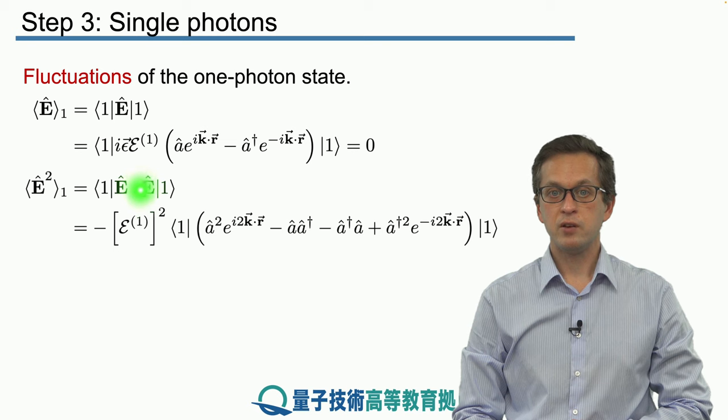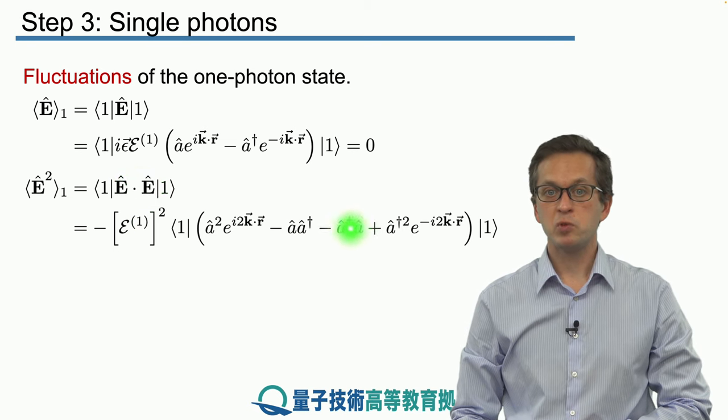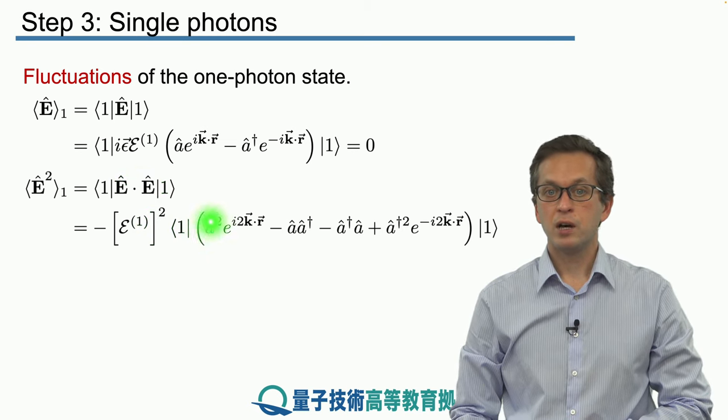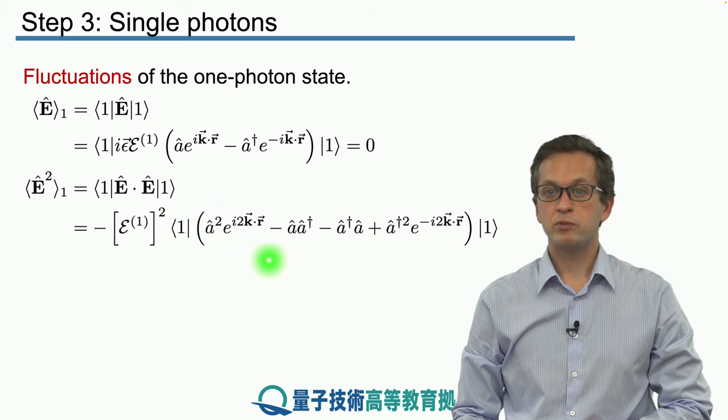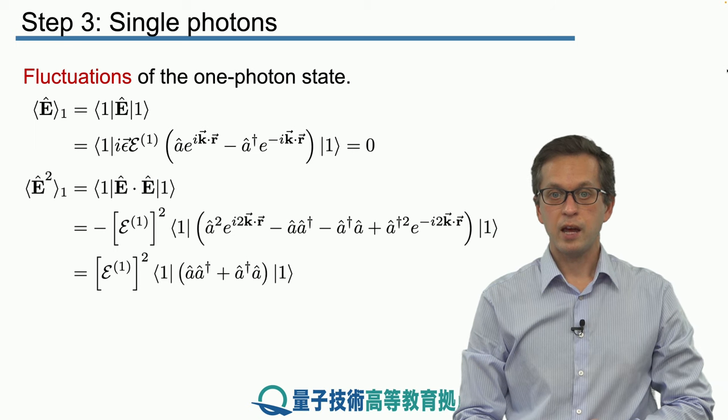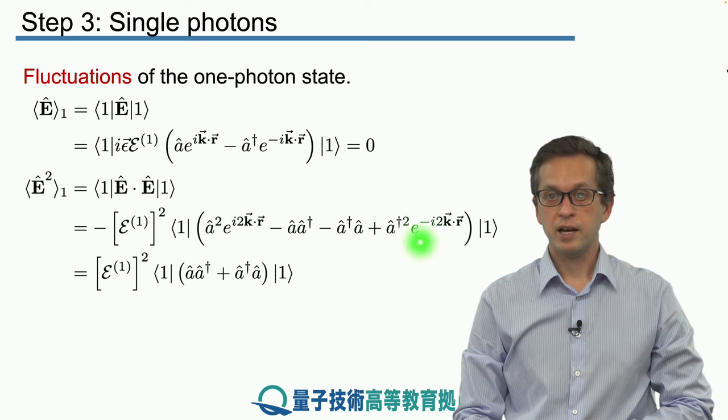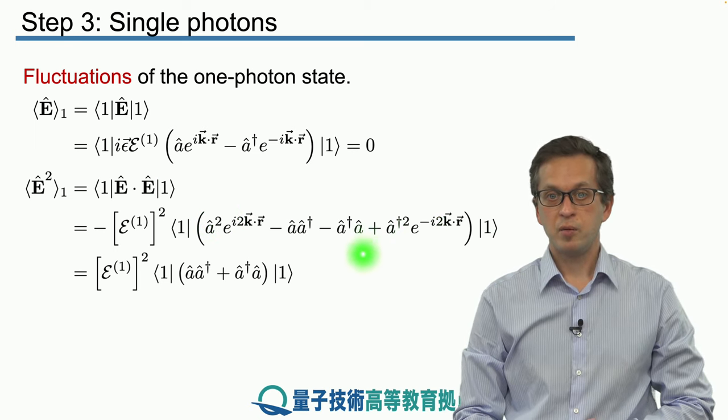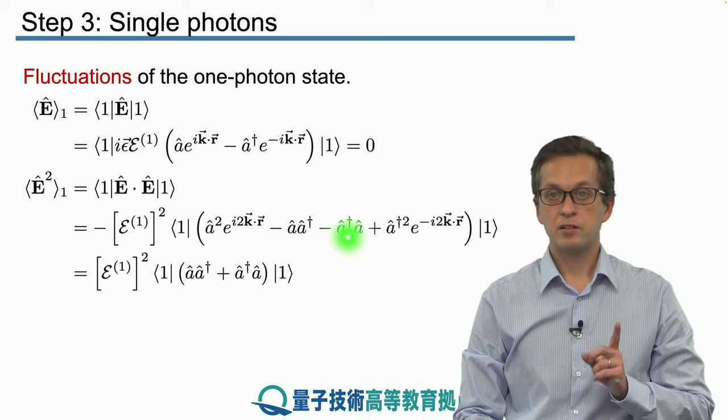Again when we square the E we get the same expression as we saw before, but to remind you we are taking the average with respect to the one photon state, ket 1. Again a squared disappears, a dagger squared disappears.